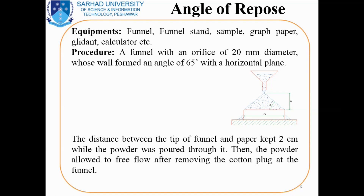The powder will form a heap on the horizontal plane where we have already placed graph paper in order to determine the diameter. When the powder stops flowing and touches the tip of the funnel, we will determine the height of the heap and the radius of the heap. By putting these values into the formula theta equals tangent inverse 2h by d, we will determine the angle of repose.